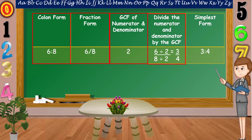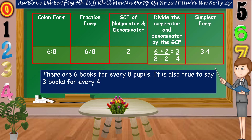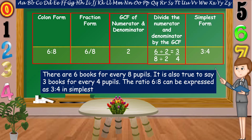So, let's divide. 6 divided by 2, the answer is equal to 3. 8 divided by 2, the answer is equal to 4. Therefore, in simplest form, our answer is 3 is to 4. There are 6 books for every 8 pupils — it is also true to say 3 books for every 4 pupils. The ratio 6 is to 8 can be expressed as 3 is to 4 in simplest form.